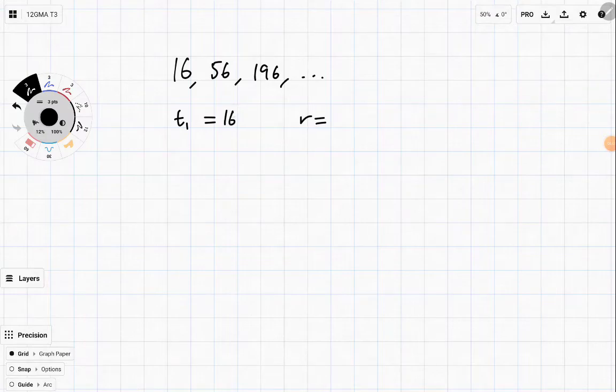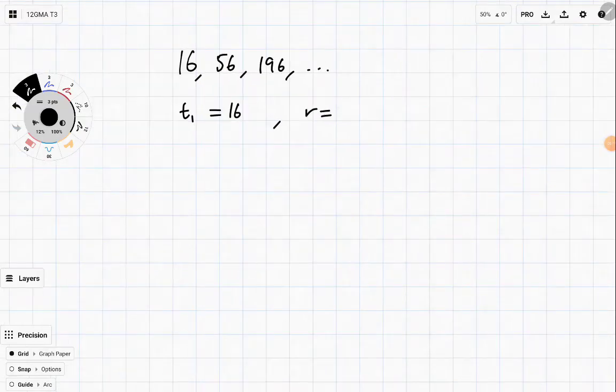R is the more interesting one. Now you can scratch your head for a bit. But this is actually one you probably wouldn't know. So in order to work it out, you just need to divide subsequent terms.